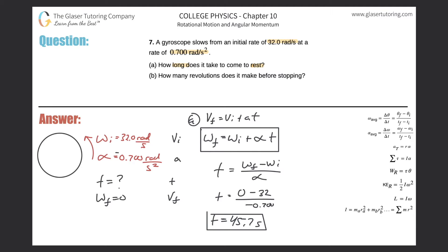Let's take a look at letter B. So how many revolutions does it make before stopping? Remember, revolutions in terms of your angular variables, it's going to correlate with theta. Now theta, remember, is in radians.